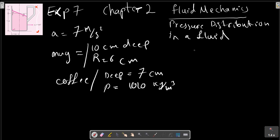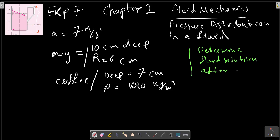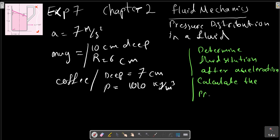The demands of the problem are: assuming rigid body acceleration of the coffee, determine whether it will spill out of the mug, and calculate the gauge pressure in the corner at point A, which is shown in the picture.